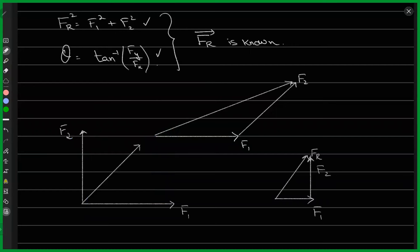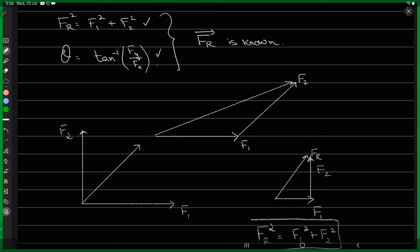Now it's just a matter of using the Pythagorean theorem, which says that FR squared — which is the hypotenuse — is just F1 squared plus F2 squared. And that gives you your resultant force vector. So that one is clear, and this next one is what we are going to talk about.